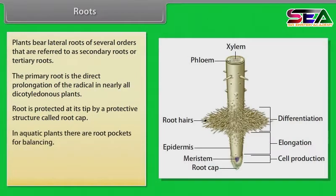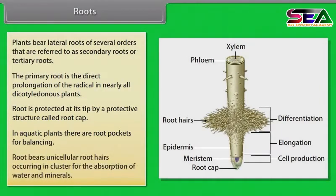In aquatic plants, there are root pockets for balancing. Root bears unicellular root hairs occurring in clusters for the absorption of water and minerals.